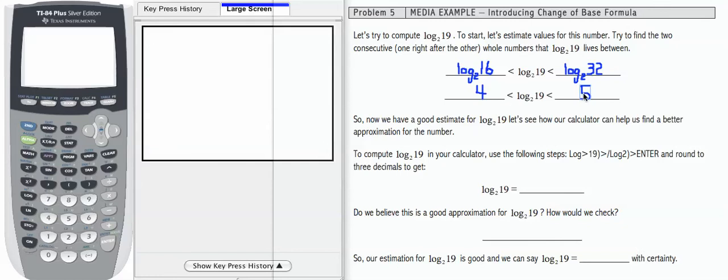I'm going to make a pretty reasonable guess that it's going to be closer to 4 since 19 is closer to 16 than it is to 32. So now that we have a good estimate, let's see how our calculator can help us find the value more exactly.